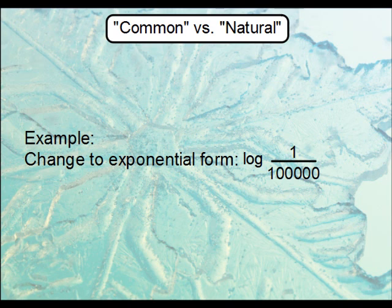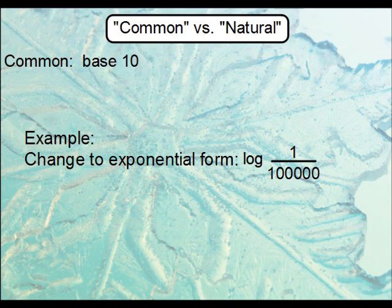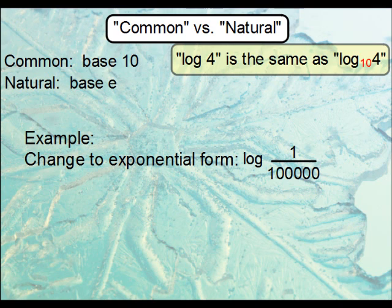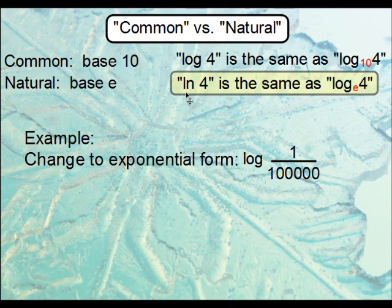Let's change this to exponential form. The log of 1 over 100,000. One of the first things to note is that there's no base written — we refer to that as the common log, and the common log has a base of 10. So the log of 4 is the same as the log of 4 base 10. We also have the natural log, which has a base of e, denoted with ln. So ln of 4 can be rewritten as the log of 4 base e. The ln will never have a base other than e.